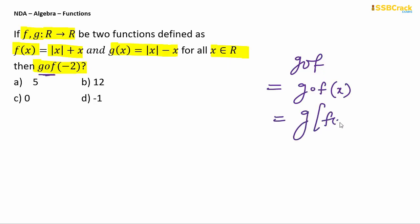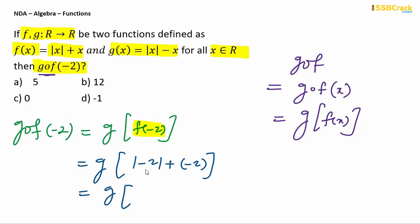We will determine g of f of -2, which we will determine from g of f of -2. First we determine f of -2 using the function evaluation concept by substituting x equals -2. This gives g of (mod of -2 plus -2), which is g of (2 minus 2). The answer is g of 0. Evaluating at point 0, the g function definition gives us mod 0 minus 0, which equals 0. The overall value of the g of f function is 0, so option C is the right choice.